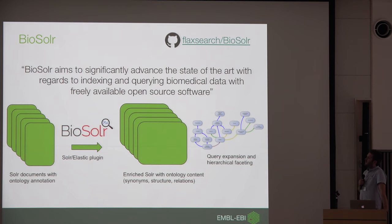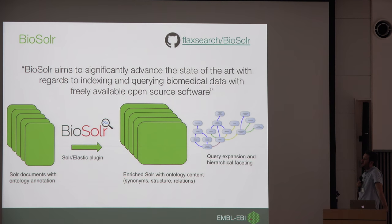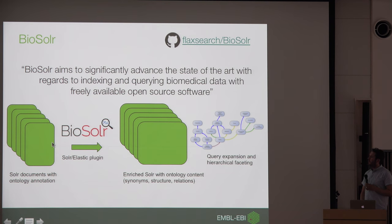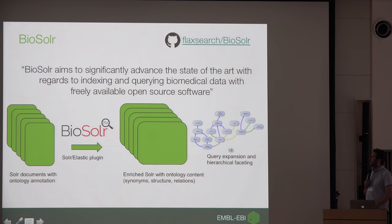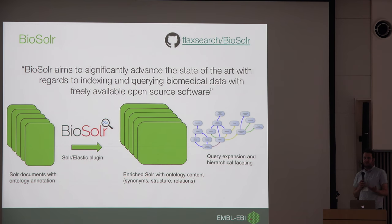One other thing I want to mention is the Biosolar project. Given that we've got all this ontology annotation, how do we enable developers at the EBI to make advantage of it in their applications? A key area is improving search. Biosolar — which is not just about Solr, we've also written a plugin for Elasticsearch — essentially takes a set of documents with ontology annotations and automatically enriches those documents with extra ontology content. It sucks in all the synonyms and the structure of the ontology so you can then do querying with hierarchical facets exploiting the ontology structure. That's what I mean by being technology-agnostic: we have to look at the tools people are using and think about how to exploit this rich semantic content across different service teams.